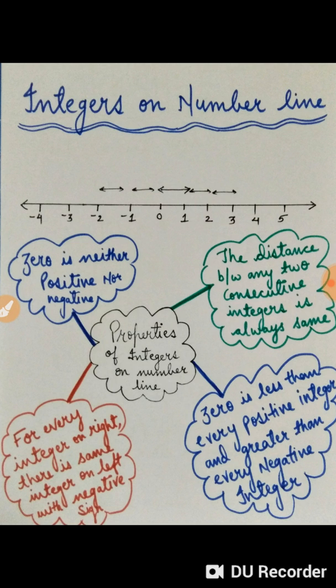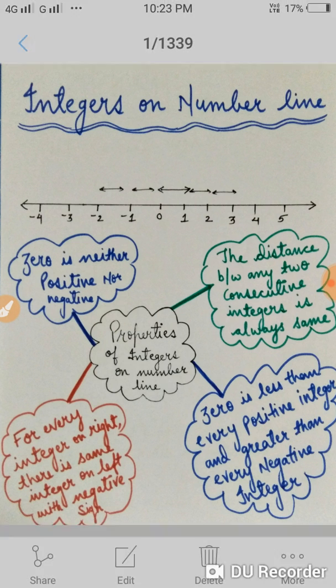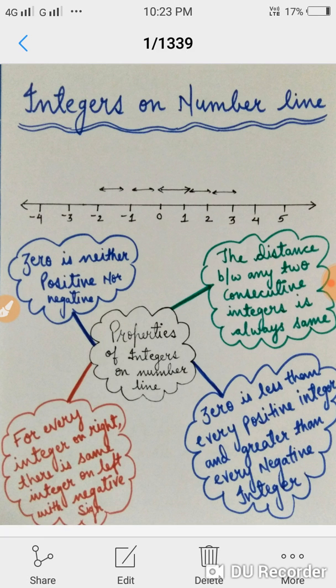For example, the distance between positive 4 and positive 5 and the distance between negative 3 and negative 4 is same, which is equal to 1 unit. Next is For every integer on right, there is same integer on left, but with negative sign. For example, we have positive 1 on right of 0 and we again have 1 on left of 0 but with negative sign.